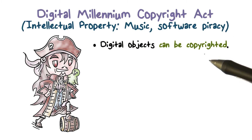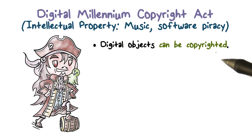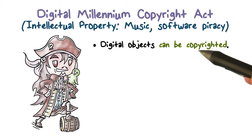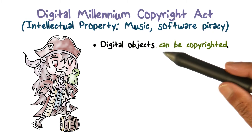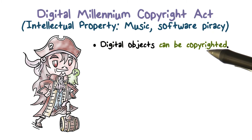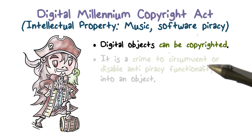First of all, DMCA says that digital objects can be copyrighted. You have protections when you obtain a copyright on something — that was the non-digital world. The same thing now applies to digital objects.